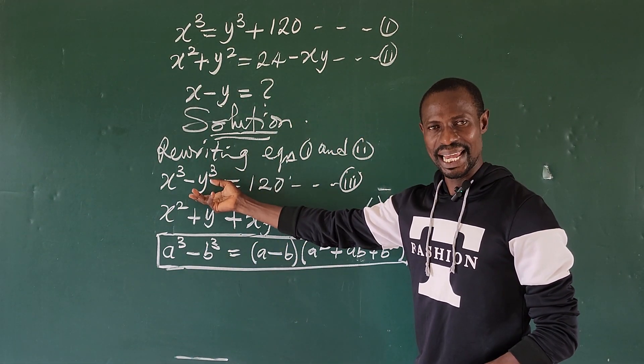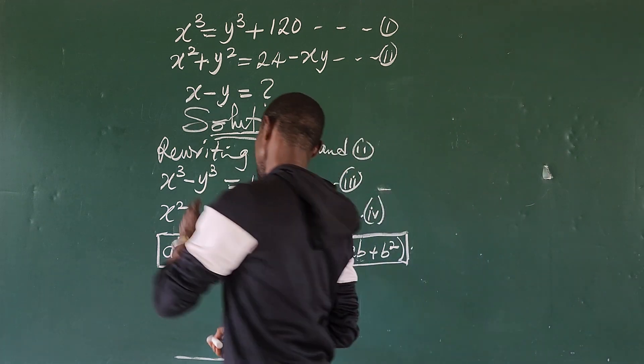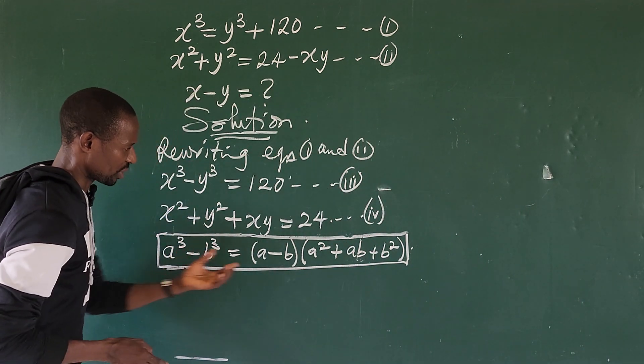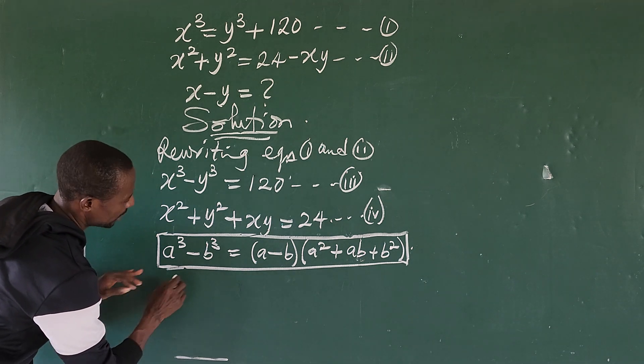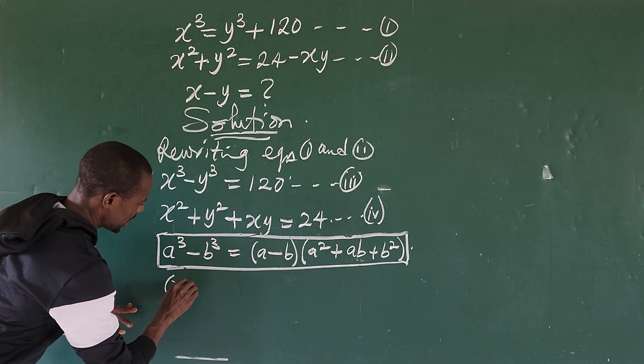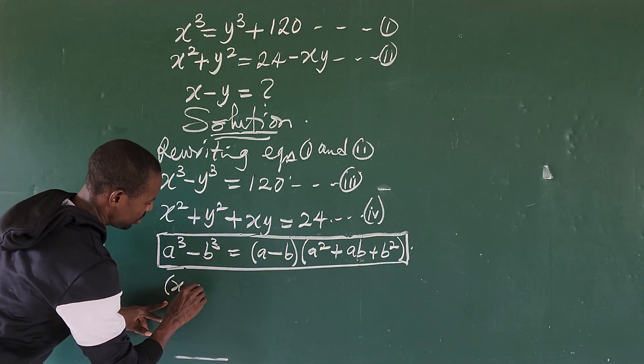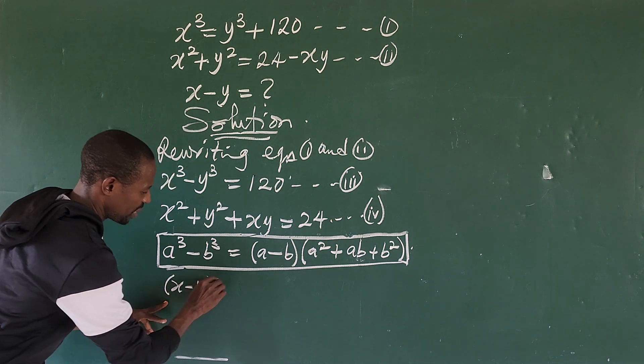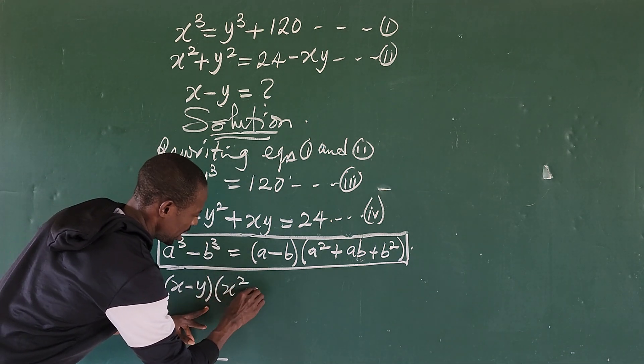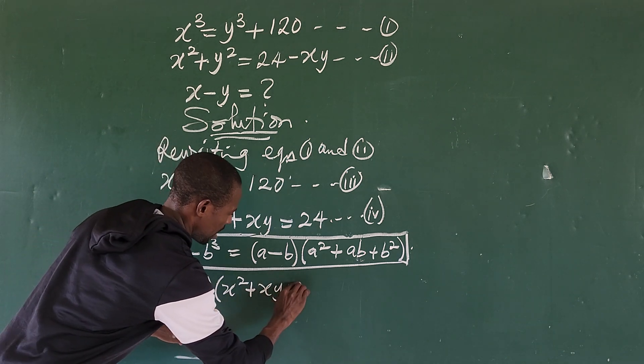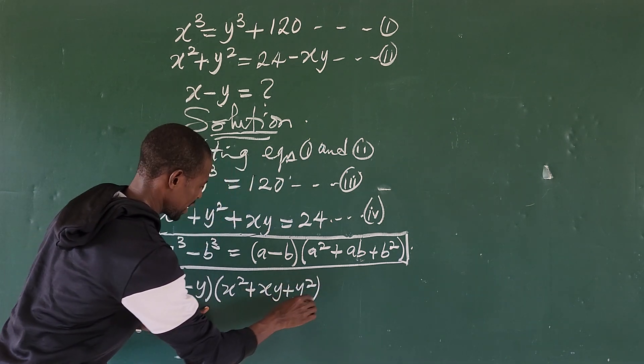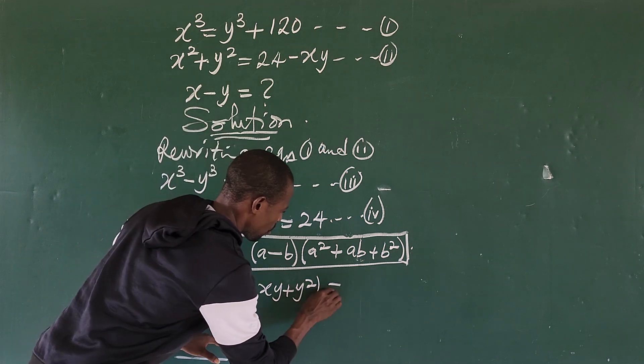Rewriting equation three in this format gives us (x - y)(x² + xy + y²) equals 120. Easy, right?